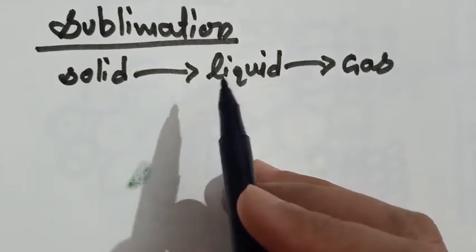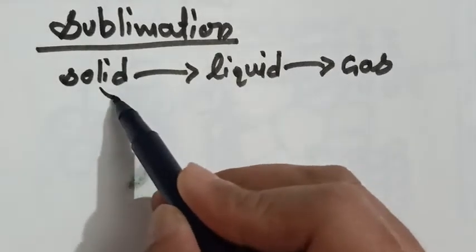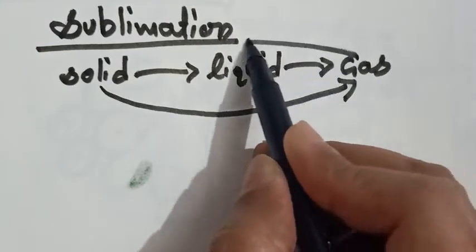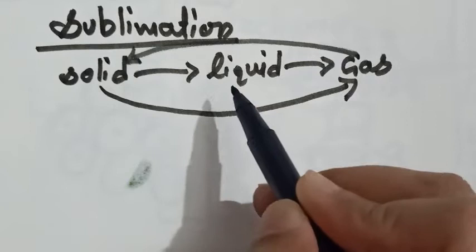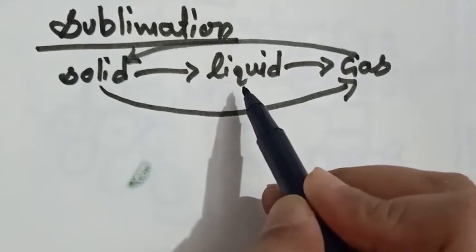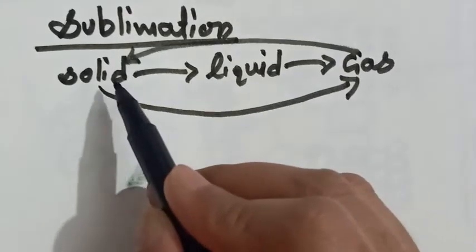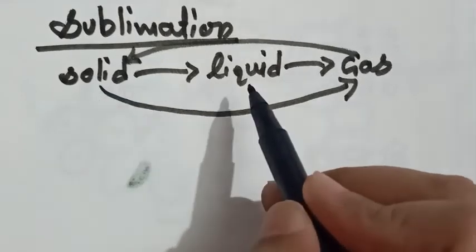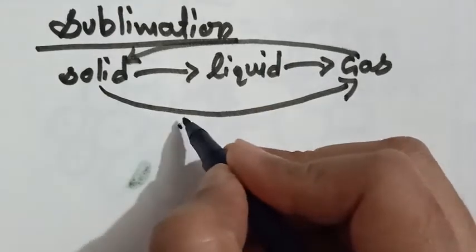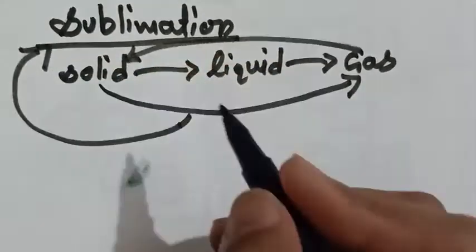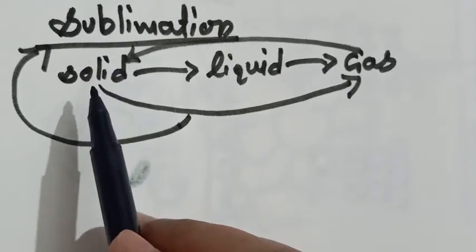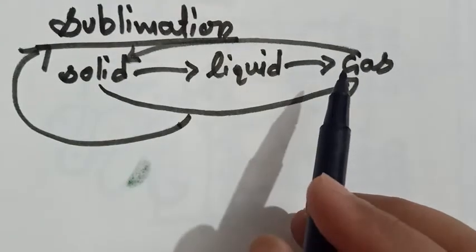But here is one more process in which a solid changes directly into a gas, or a gas can directly change into a solid without converting first into liquid. Some solids vaporize without melting. This phenomenon is known as sublimation — sublimation is a process in which a solid directly changes into a gaseous state.